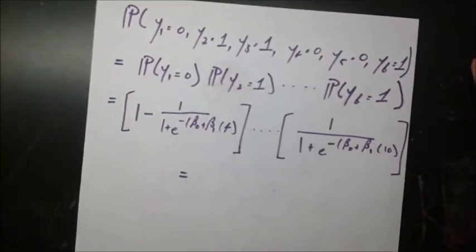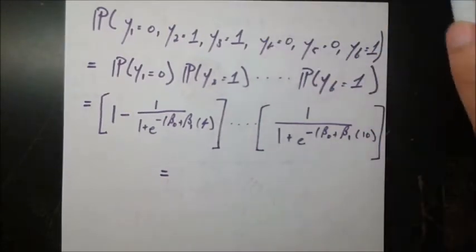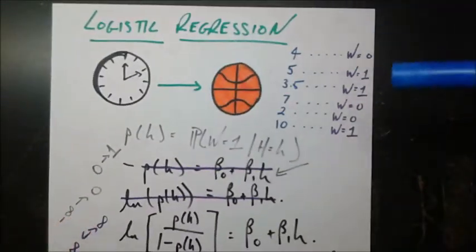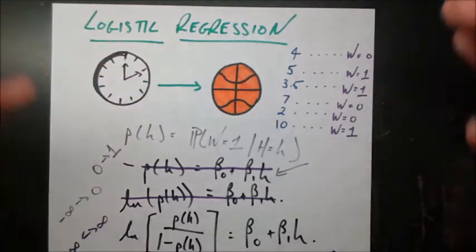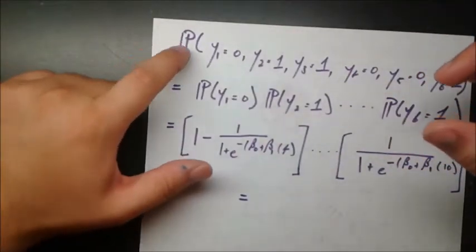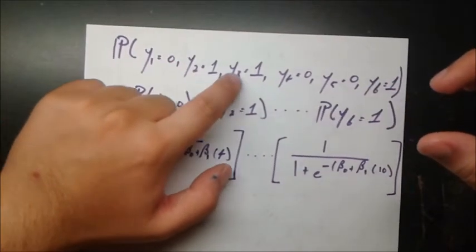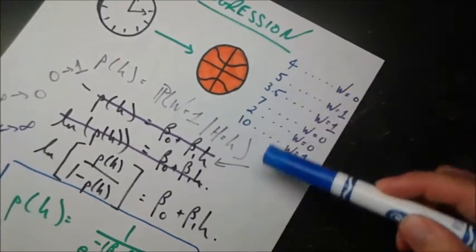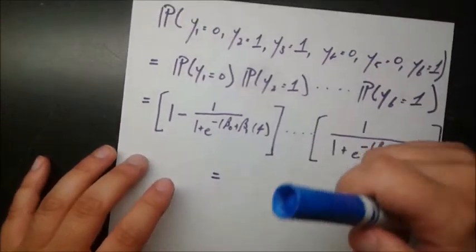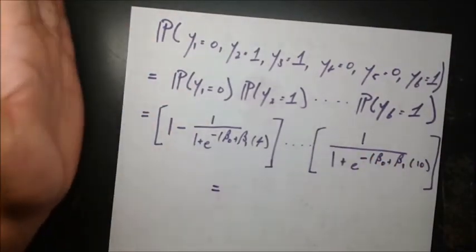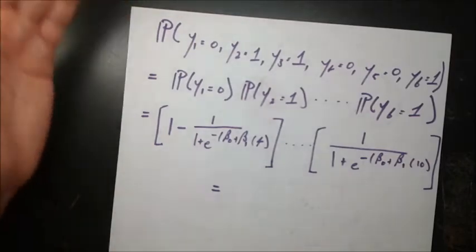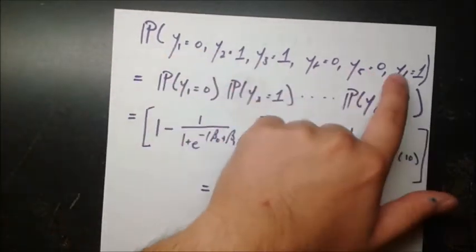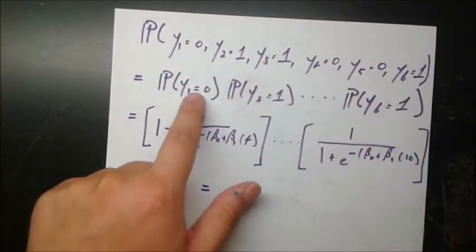The intuition is that we want to find the betas such that the probability of our sample occurring is maximized — and why we want to do that is because our sample did in fact occur. When you have a real sample, those are values you actually observed from the real world. What we want to know is the probability that the first game was a loss, the second was a win, the third was a win, and so on. Since each game is independent, we can break this up into a multiplication of the six individual probabilities, and we have formulas for each of those.